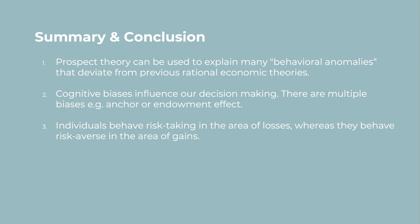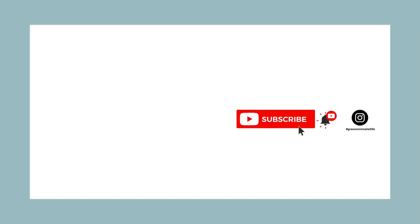Just to sum it up: prospect theory can be used to explain many behavioral anomalies that deviate from previous rational economic theories. Cognitive biases influence our decision making — there are multiple biases, for example the anchor effect and endowment effect, which I will explain in a different video. Lastly, individuals behave risk-taking in the area of losses, whereas they behave risk-averse in the area of gains. I hope I was able to give you an insight into what prospect theory is. If you enjoyed watching this video, don't forget to hit the like button and subscribe to this channel. See you next time!